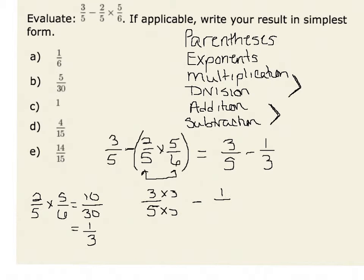Likewise, to get the fraction 1/3 with a common denominator of 15, we would multiply numerator and denominator by 5.